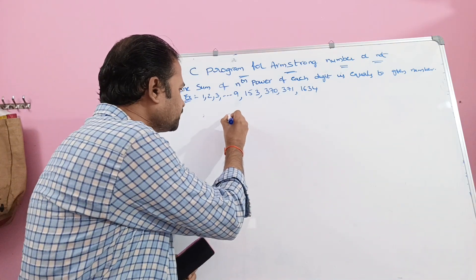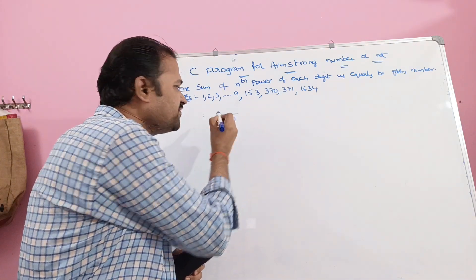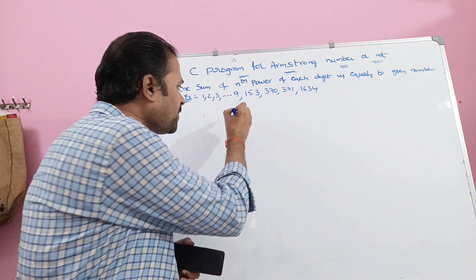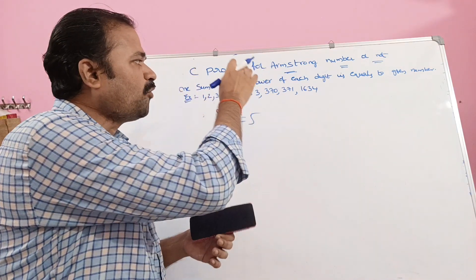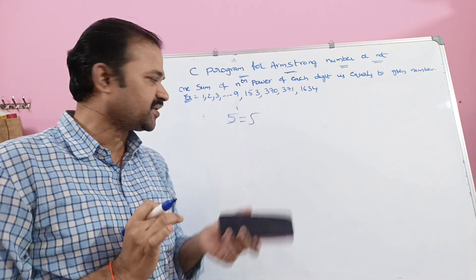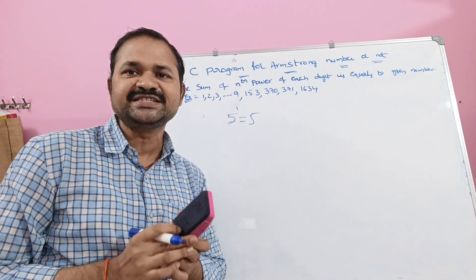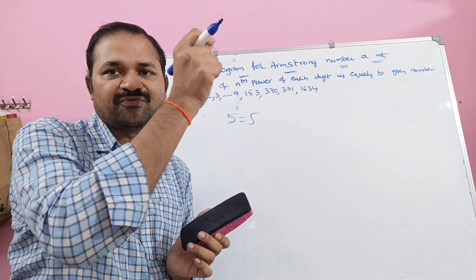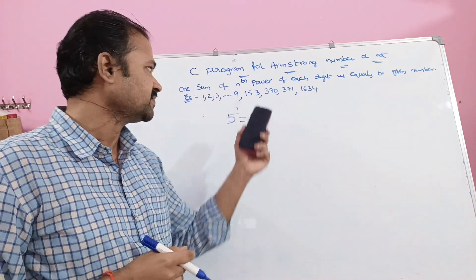Let's take 5. So 5 has only 1 digit. The sum of nth power of each digit — so we have to raise it to the power 1. So 5 power 1 is equal to 5.